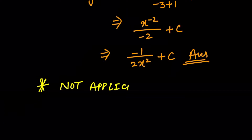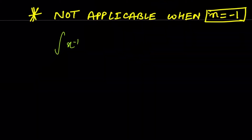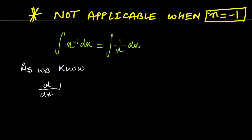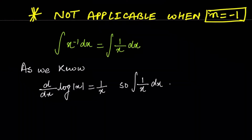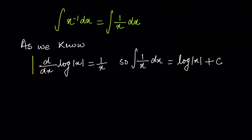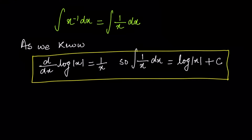This formula has one exception: when n = −1. When n = −1, we have x^(−1), which is 1/x. In differentiation we saw that the derivative of log|x| is 1/x. Since integral is the inverse process of differentiation, the integral of 1/x dx = log|x| + C. This is the only exception where the x^n formula is not applicable, i.e., when n = −1.